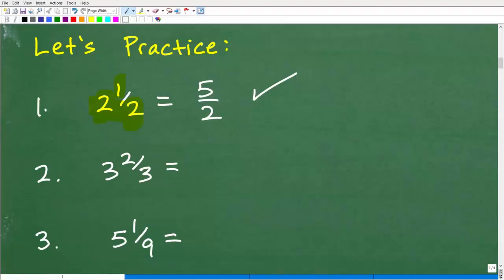Let's move on to our next problem. 3 times 3 which is 9 plus 2 is 11. So 9 plus 2 is 11 over that little 3 right there, and that is the answer, 11/3. This is not that difficult.